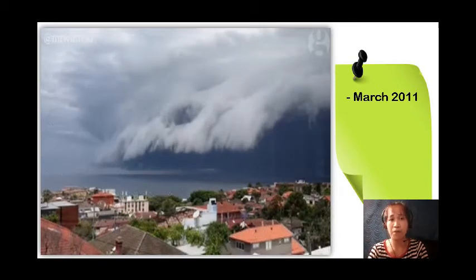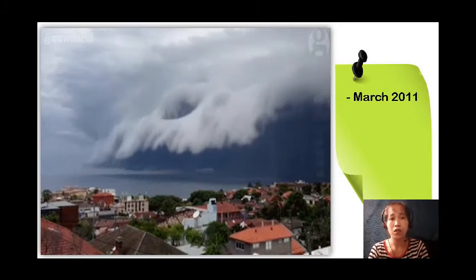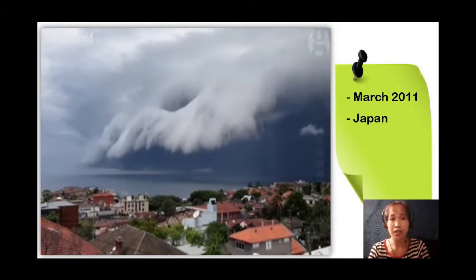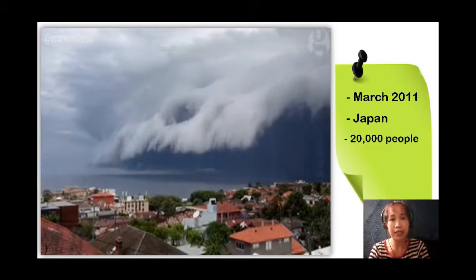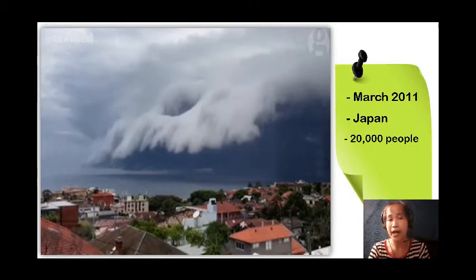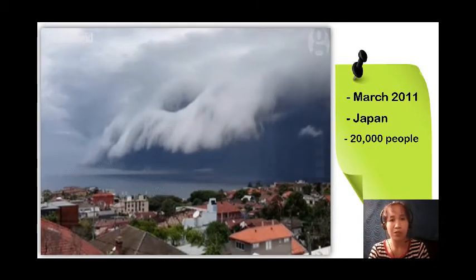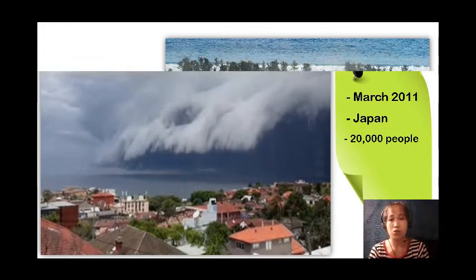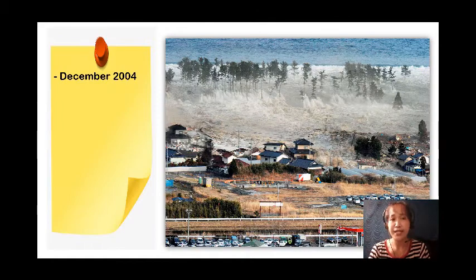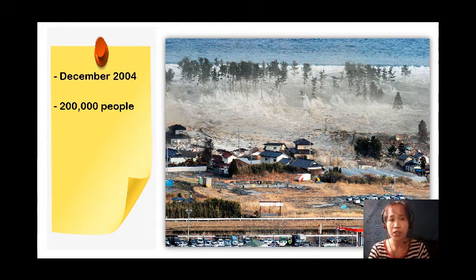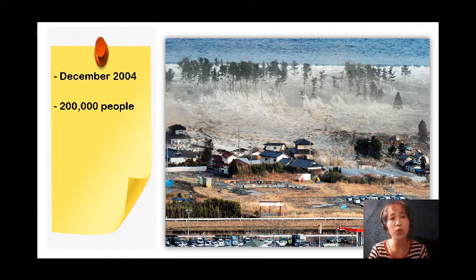In March 2011, a powerful earthquake took place in the Pacific Ocean near Japan. Afterward, a tsunami hit Japan and 20,000 people were killed, and more than a million houses and buildings were damaged or destroyed. In December 2004, a strong earthquake occurred in the Indian Ocean near Indonesia. A tsunami soon followed, and more than 200,000 people were confirmed dead, many of them from Indonesia, Thailand, India, and Sri Lanka.